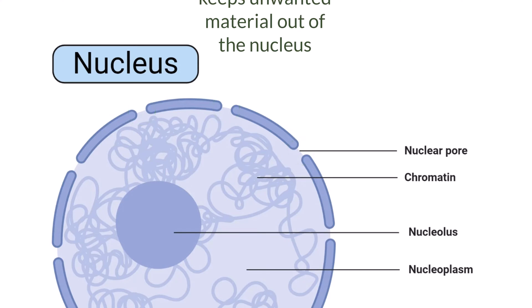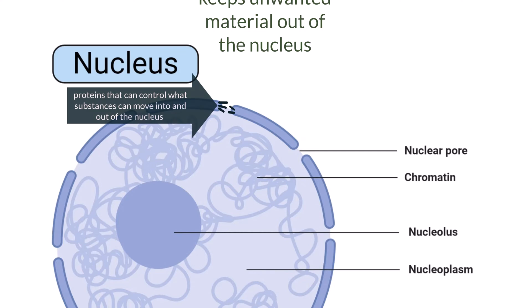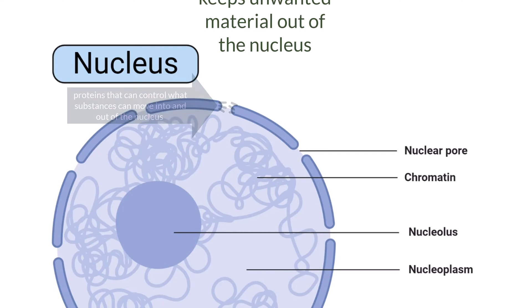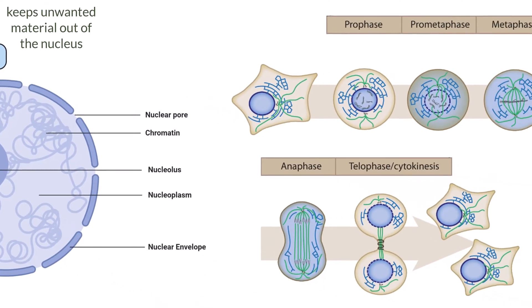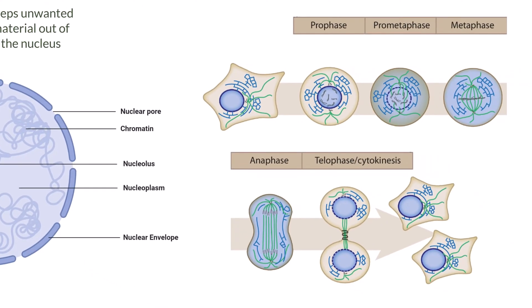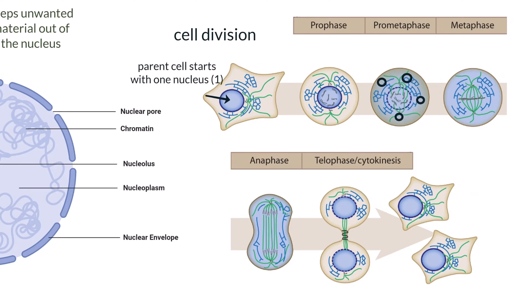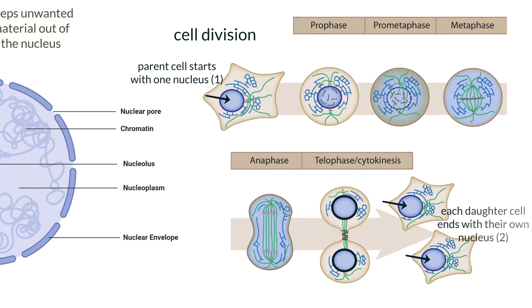These pores are larger than the typical protein channel and have proteins that control what substances can move through them. Additionally, the double membrane of the nucleus is versatile when it is being broken down and built up. The process of cellular division requires the nuclear membrane to break down, which it does by forming into smaller circular vesicles. When the process of mitosis is ending and the chromosomes are moved to either side of the cell, those membrane vesicles can fuse together to recreate two new nuclear membranes around each set of chromosomes.